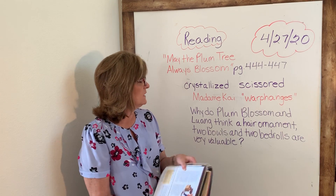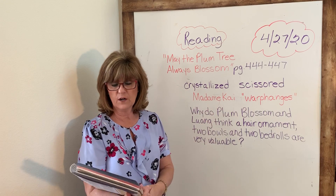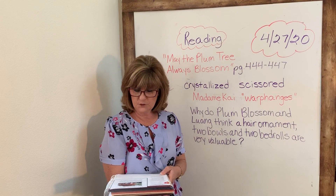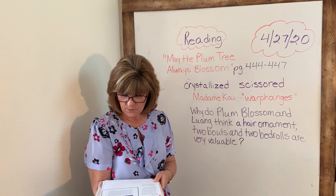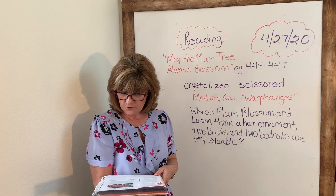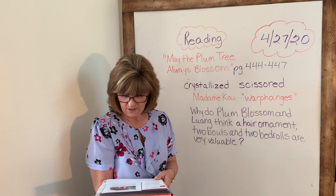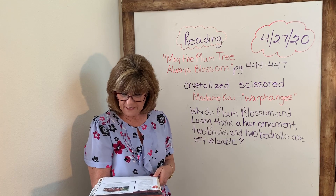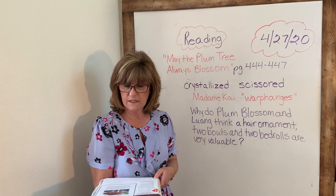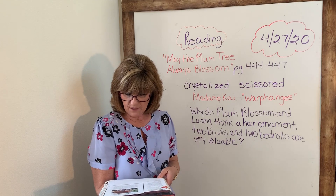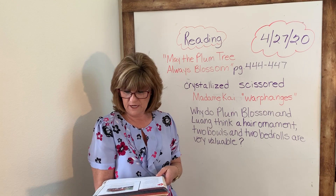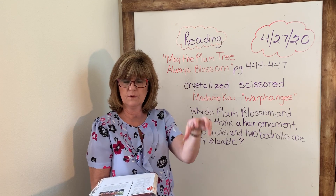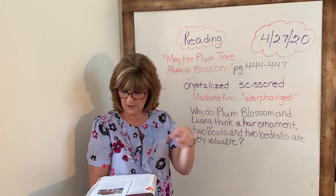So let's begin reading the story. Turn to page 444 in your book. The title is May the Plum Tree Always Blossom, written by Millie Howard, illustrated by Steve Mitchell. The following story takes place when the Japanese were invading China just before the beginning of World War Two. The setting is Hang Chao, a city in occupied China — meaning the Japanese had taken that city and area over and occupied it.